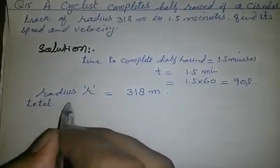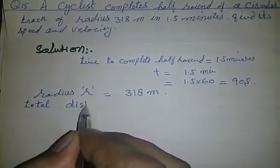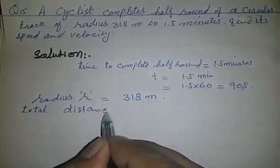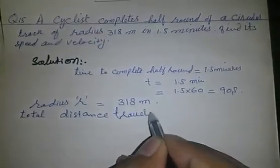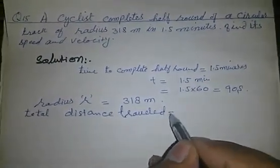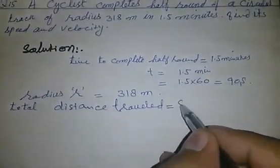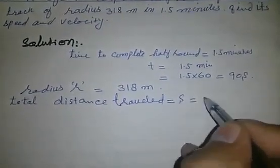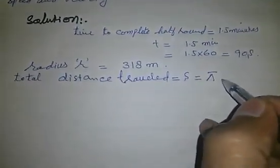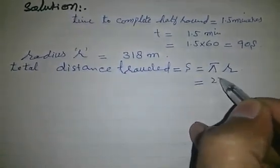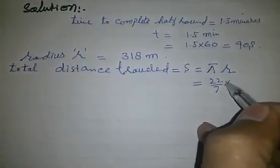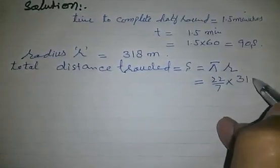Total distance traveled equals s, equals pi into r, which equals 22 over 7 into 318.